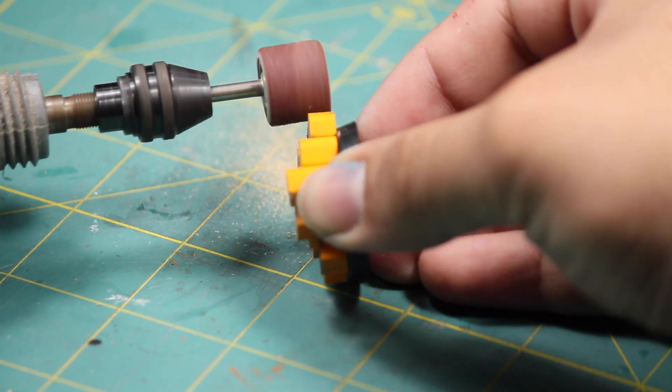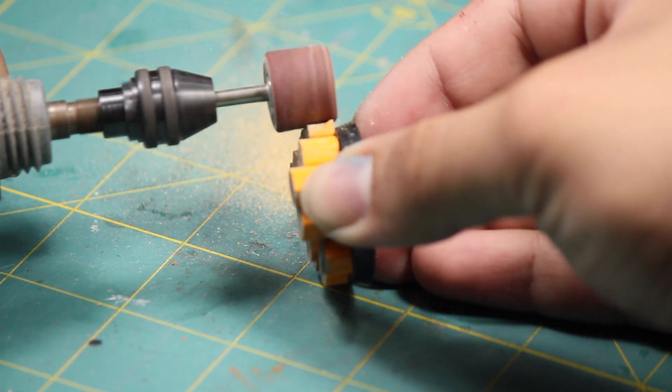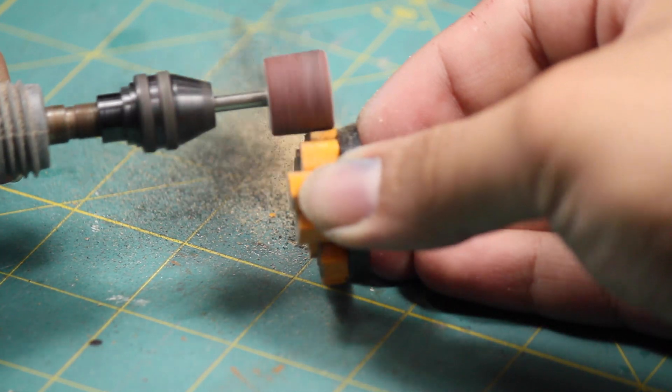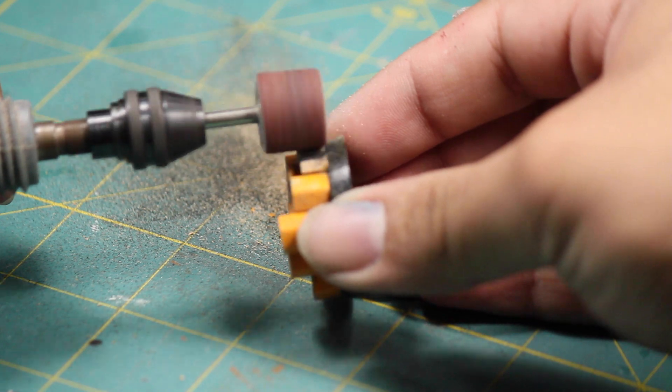Once that was dry I trimmed any overhang with a sanding drum on my dremel tool but you could also sand these down with some 60 grit sandpaper and a little elbow grease.